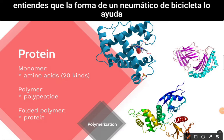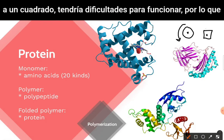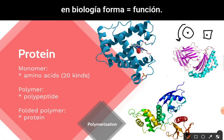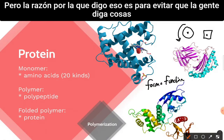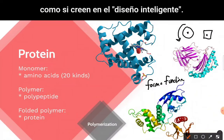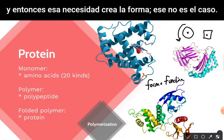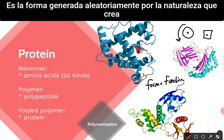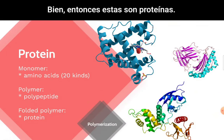To help understand that — the shape of a bicycle tire helps it to move. If you changed the shape to a square, it would have a hard time functioning. In biology, form equals function. It is the form randomly generated by nature that creates the function, not a need creating the form.